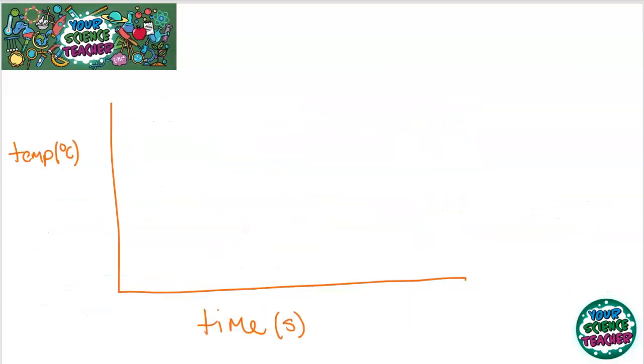If I was to record the temperature of something as I was to heat it up and watch it change state, I would observe this if I was to draw it on a graph. As I start to heat up something, the temperature will increase. However, it will start to flatten off, then increase again, then flatten off again, then increase again. This is called a heating curve.